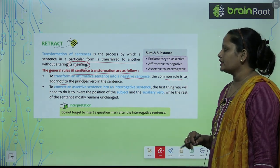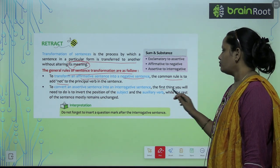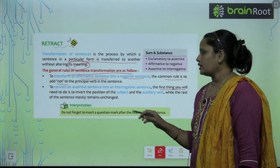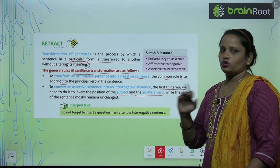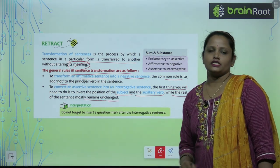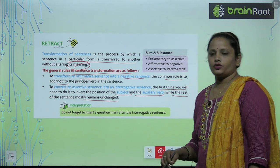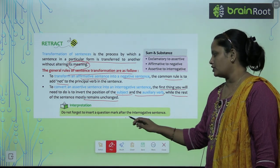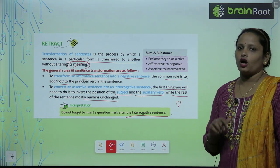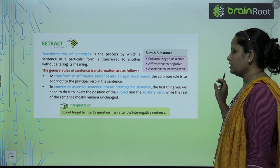To convert an assertive sentence into an interrogative sentence, the first thing you will need to do is to invert the position of the subject and the auxiliary verb. Jo auxiliary verb hai aur jo subject hai, un donon ki position ko change kar denge, while the rest of the sentence mostly remains unchanged. Do not forget to insert a question mark after an interrogative sentence.